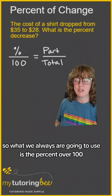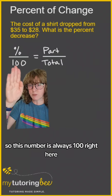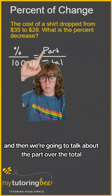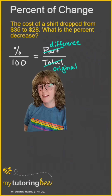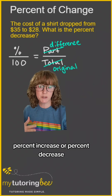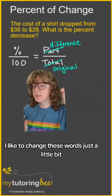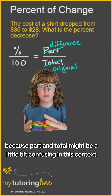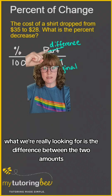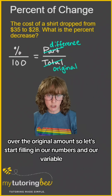What we're always going to use is percent over 100 — this denominator is always 100, and the percentage goes on top. Then we talk about the part over the total. With percent of change, percent increase, or percent decrease, I like to adjust those terms slightly, because 'part' and 'total' can be confusing in this context. What we're really looking for is the difference between the two amounts over the original amount.